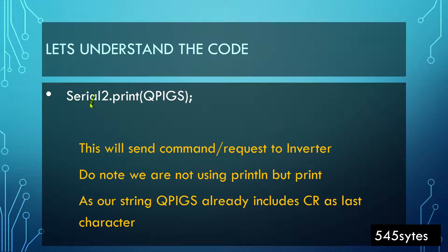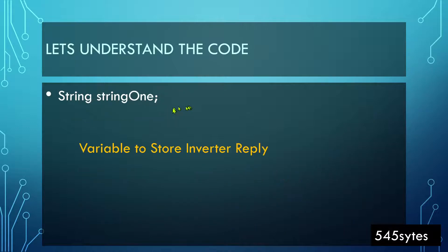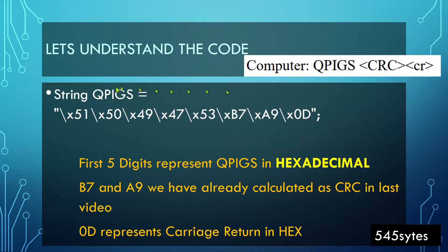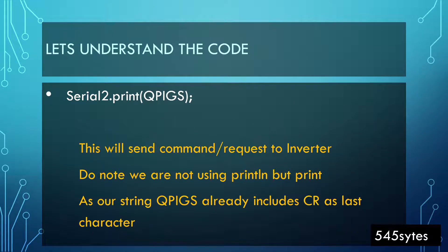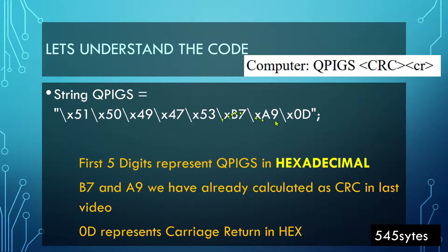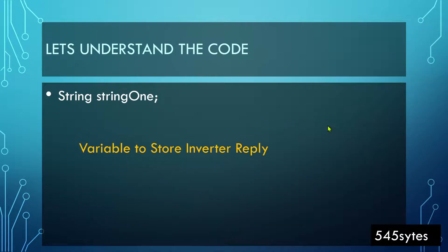The next code is Serial2.print(qpigs) — we are printing this command on Serial number two, which is the serial port communicating with the inverter. This will send the command request to the inverter. Do remember that this is print, not println, so we are not printing a new line — only print. Our code already has the 0D which represents the CR required by the inverter.